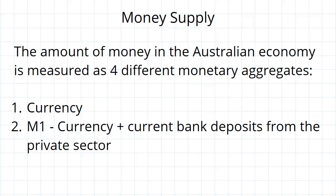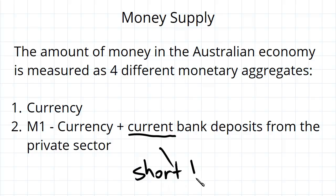We then have M1. M1 takes currency and then adds onto it the current bank deposits from the private sector. The term 'current' is just referring to those bank deposits that are of a fairly short-term nature — money held in the bank that is expected to be withdrawn fairly soon. For example, term deposits with very short maturities on them.